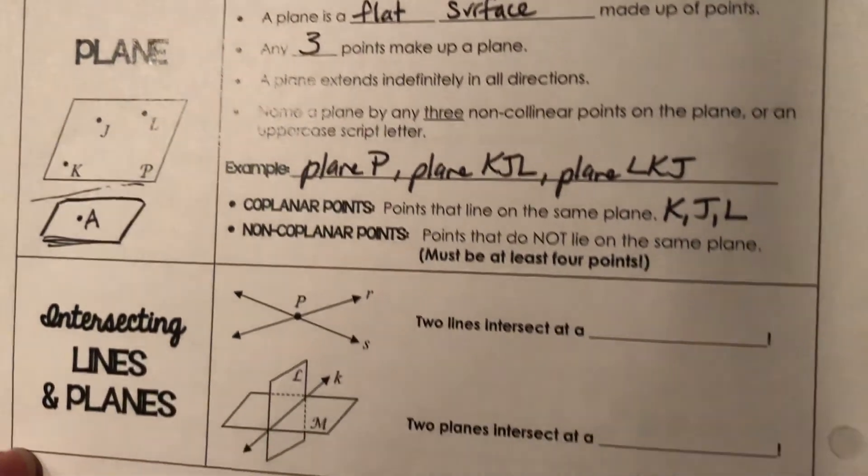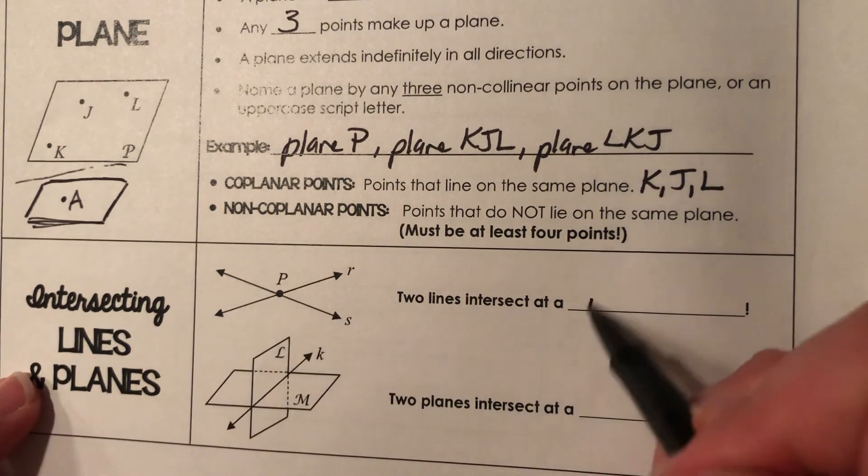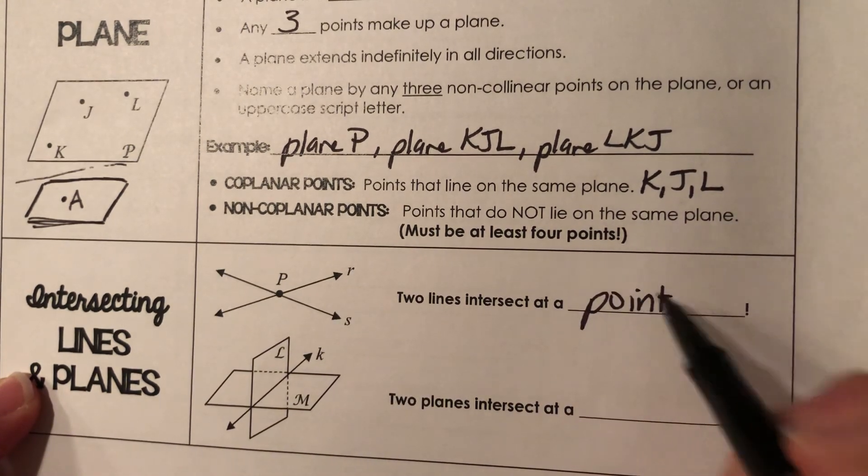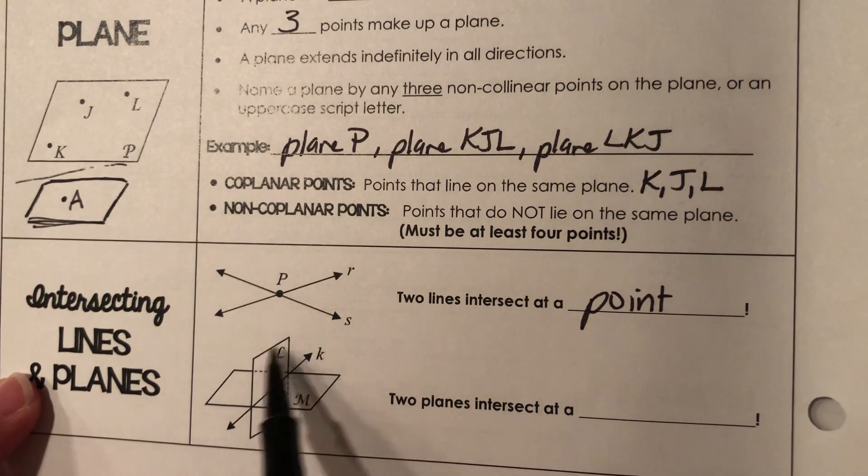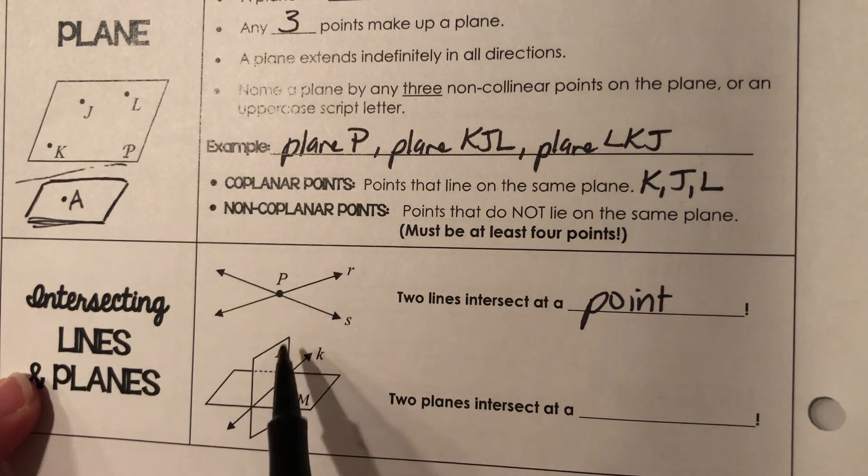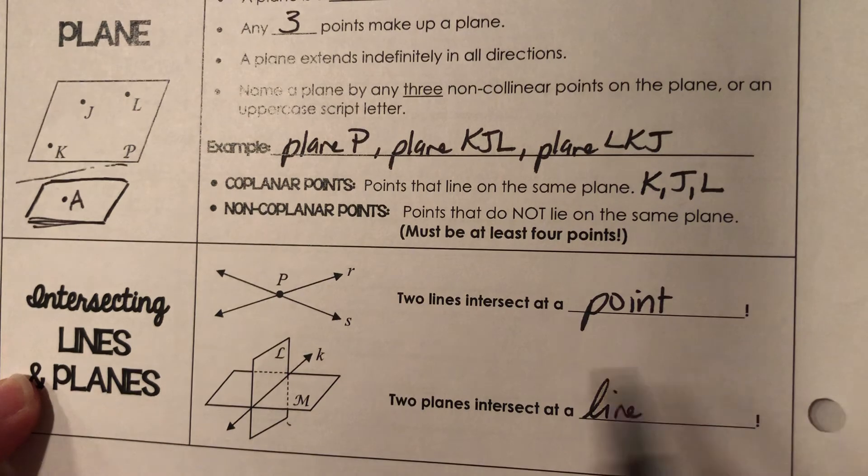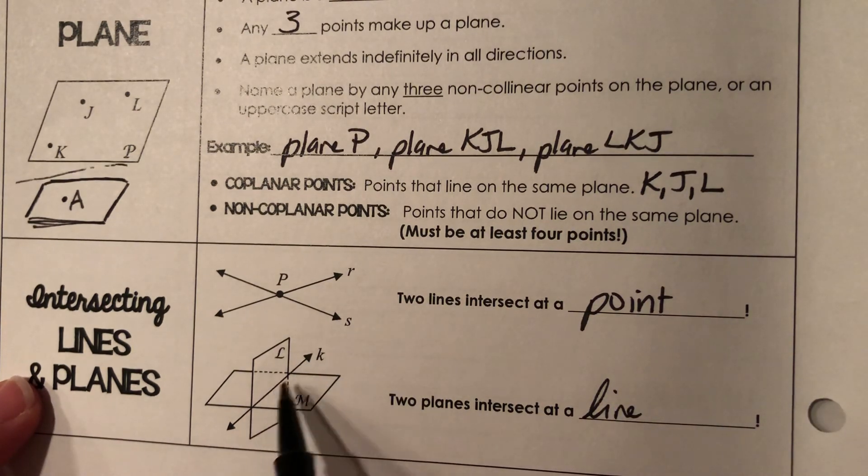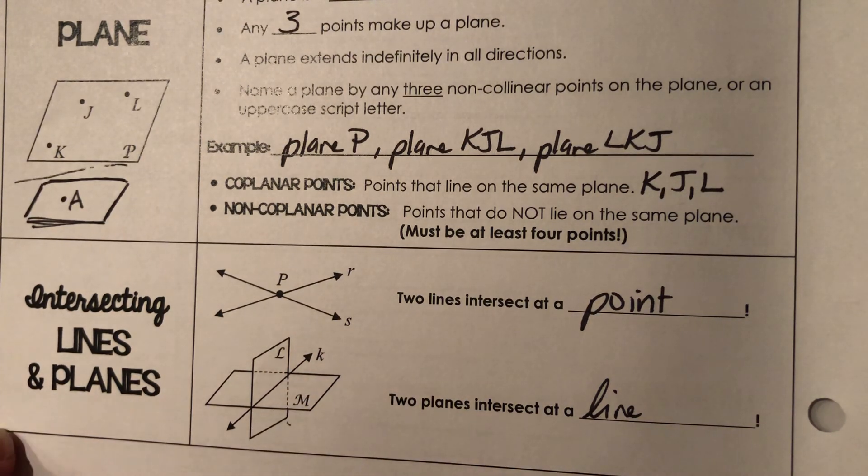Then let's talk about what it means when they intersect. So when two lines intersect, they intersect at a point. And in this example, they're intersecting at point P. When two planes intersect, so we have this plane, plane L, is vertically going up and down. And then plane M, horizontal, going left and right. When they cross each other, they intersect at a line. So line K right here is what, if you picture two pieces of paper slicing through each other, there's a line or an edge created when they do that.